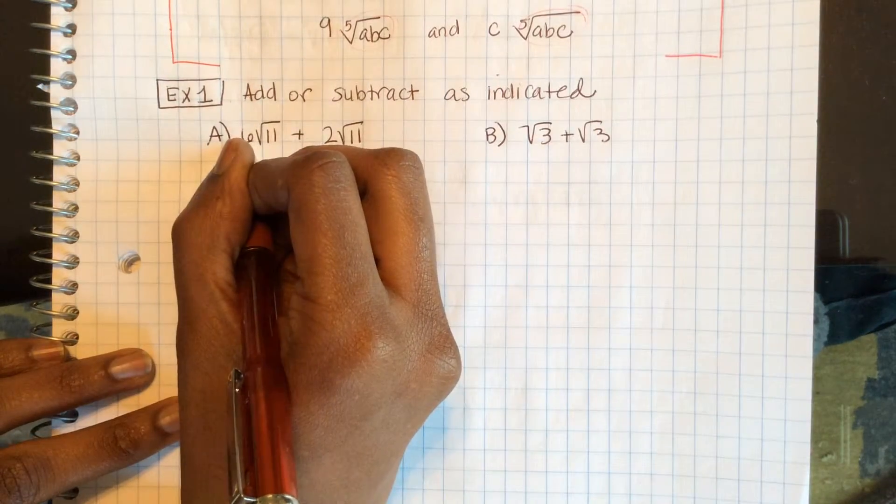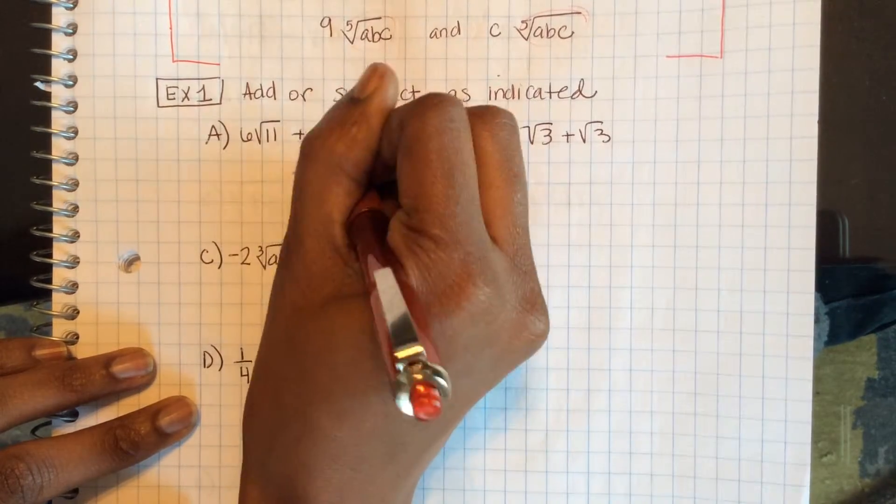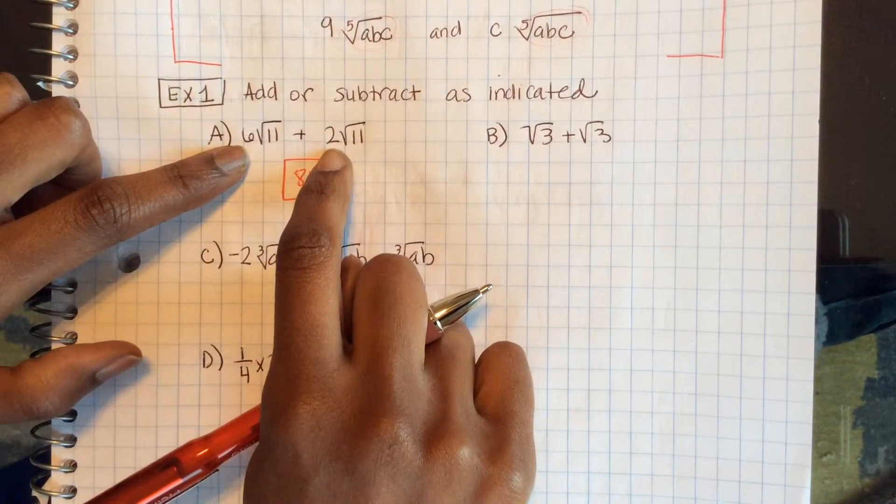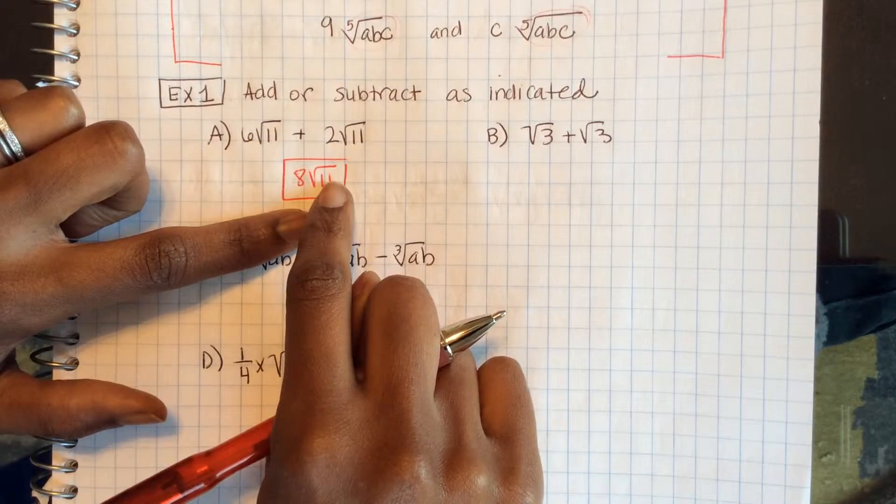6 square root of 11 plus 2 square root of 11 makes 8 square root of 11. Add your coefficients, leave your radical the same as your term.